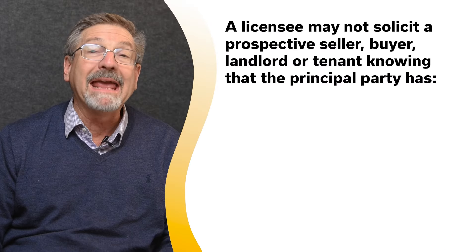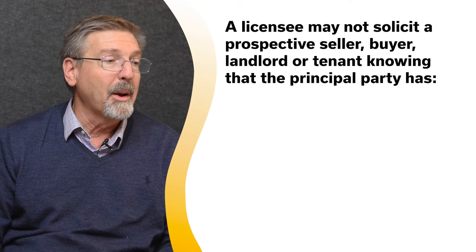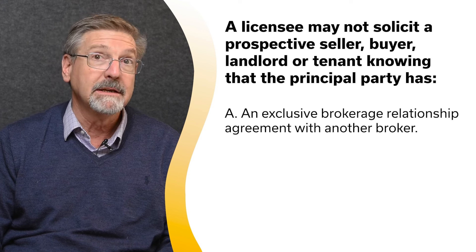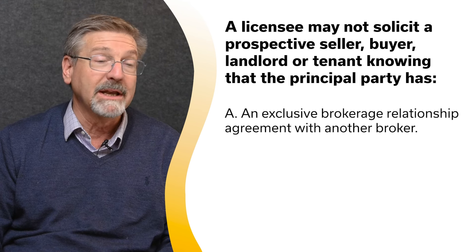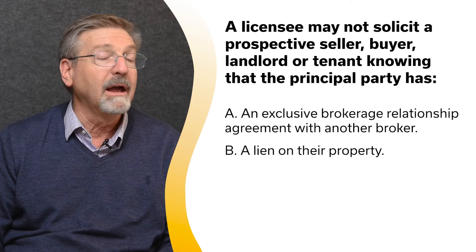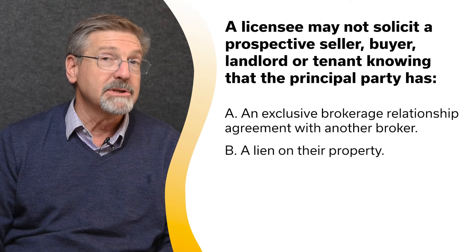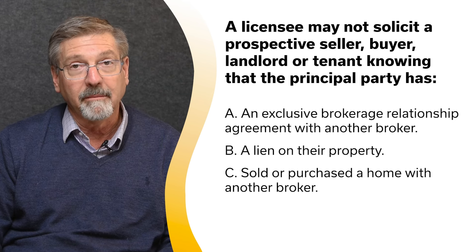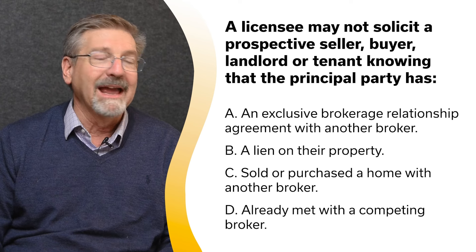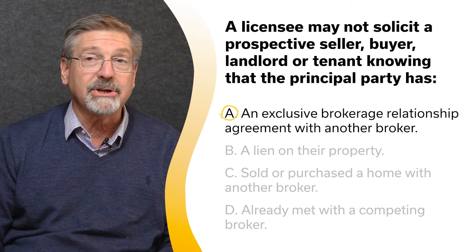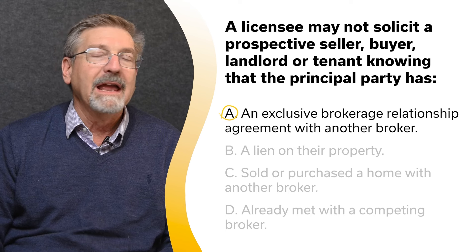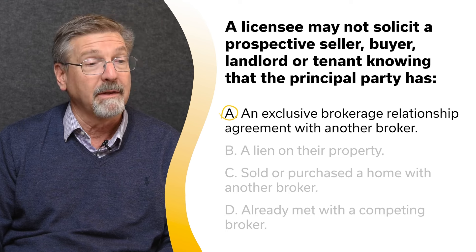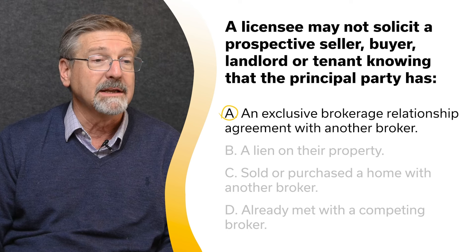A licensee may not solicit a prospective seller, buyer, landlord, or tenant knowing that the principal party has: A. An exclusive brokerage relationship agreement with another broker. B. A lien on their property. C. Sold or purchased a home with another broker. Or D. Already met with a competing broker. The correct answer is A. If a licensee is aware of an exclusive brokerage relationship agreement in place with another broker, he or she may not solicit that prospect.